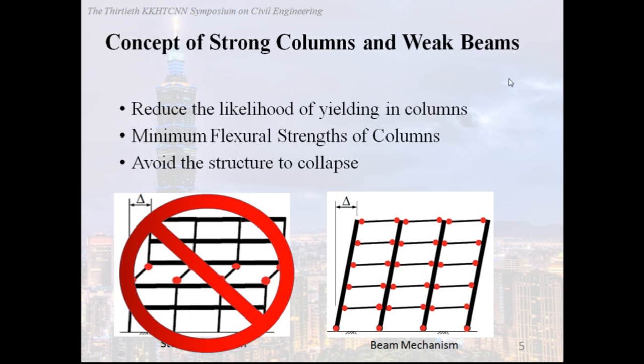Its behavior will satisfy the concept of strong columns and weak beams. Therefore, we assemble some characteristics of this concept. The first one: reduce the likelihood of yielding in columns. Second one: minimum flexural strength of columns. Third one: avoid the structure to collapse.